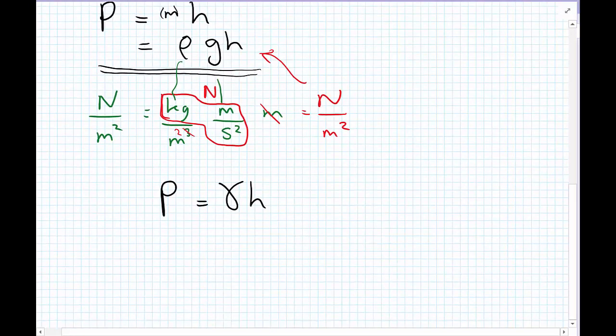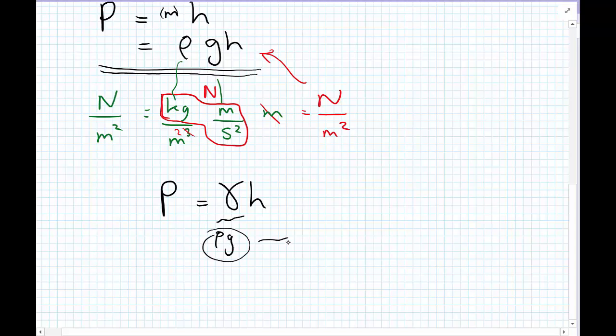Gamma, looking at the previous formula, is rho times G. And this quantity is referred to as the specific weight.